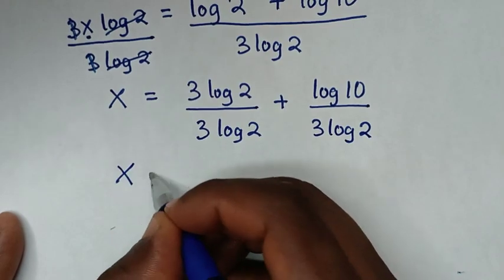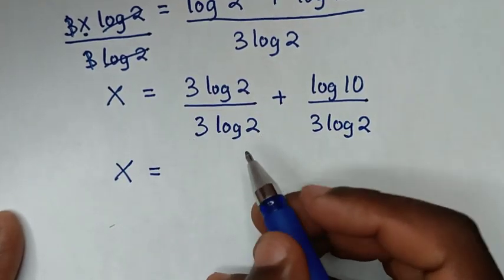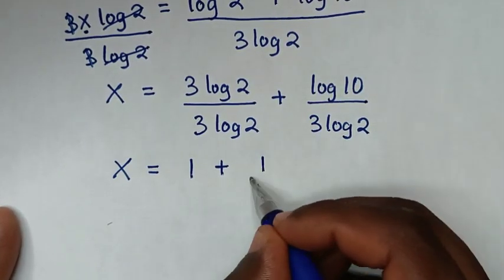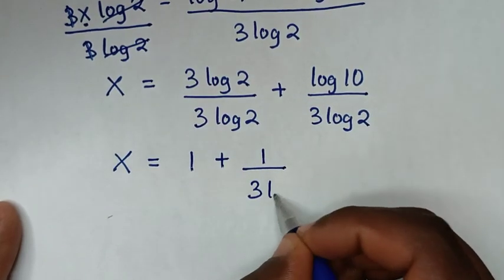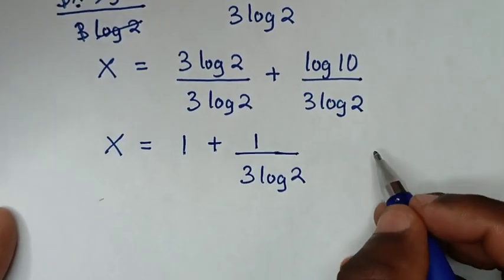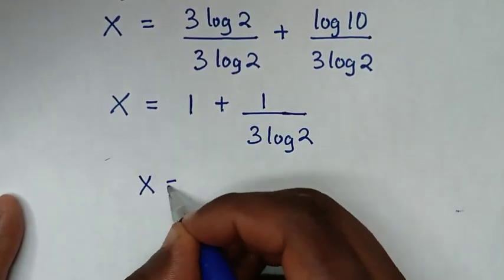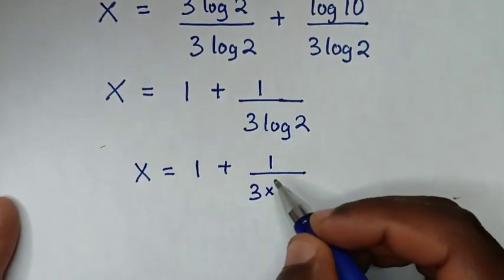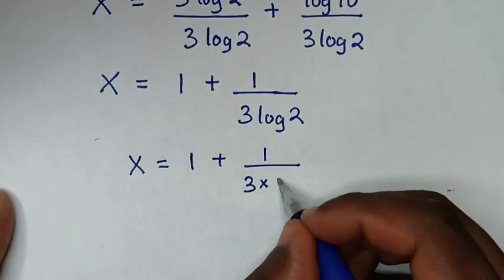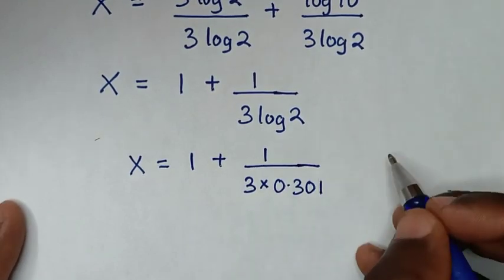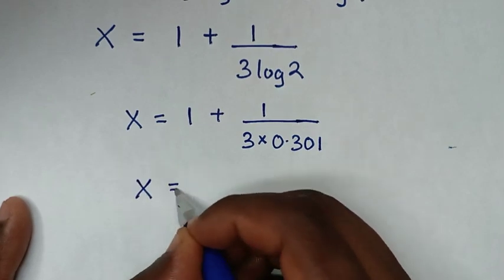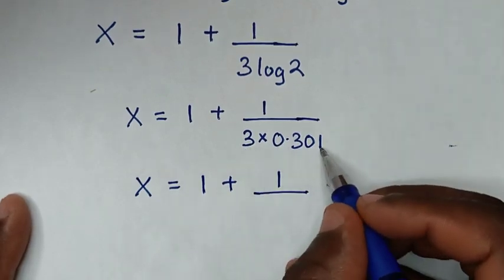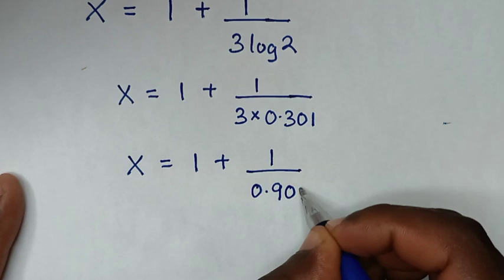Then it will be x is equal to: 3 log of 2 divided by 3 log of 2 is 1, then plus log of 10 — which is 1 — over 3 log of 2. Then it will be x is equal to 1 plus 1 over 3 times log of 2, which is 0.301. So it will be x is equal to 1 plus 1 over 3 times 0.301, which is 0.903.